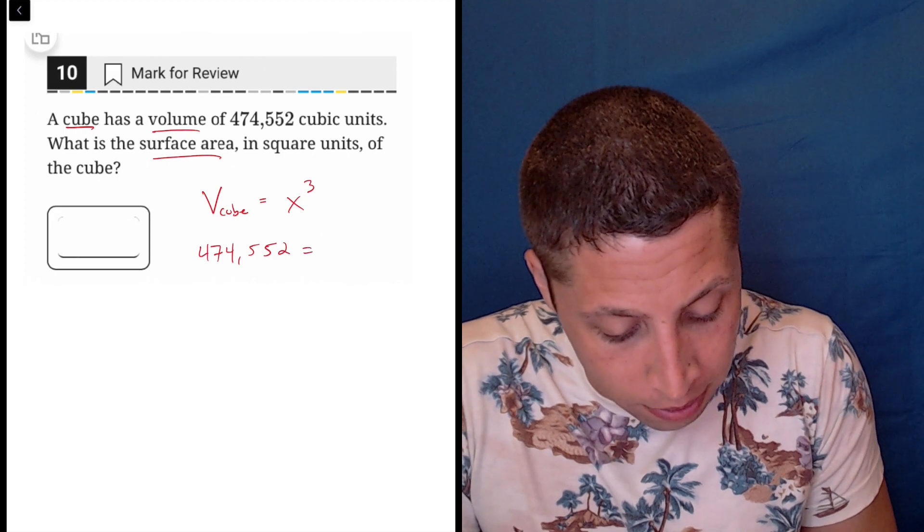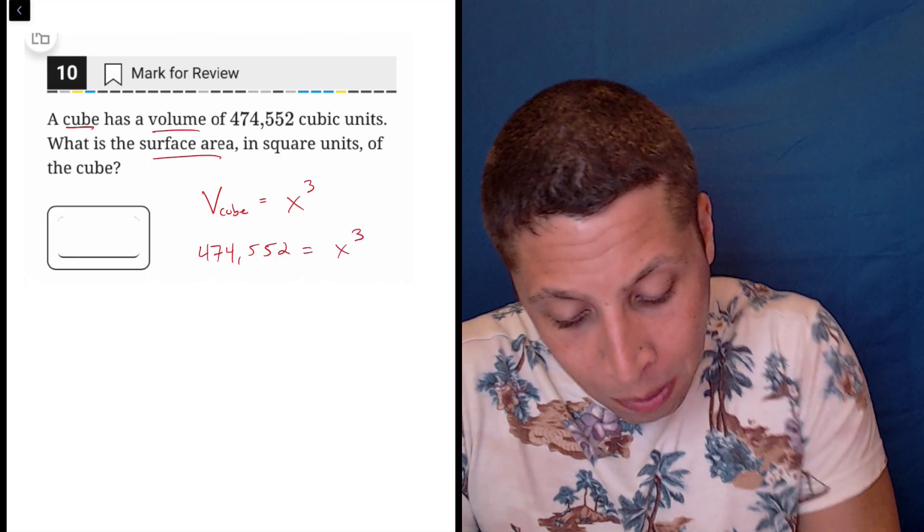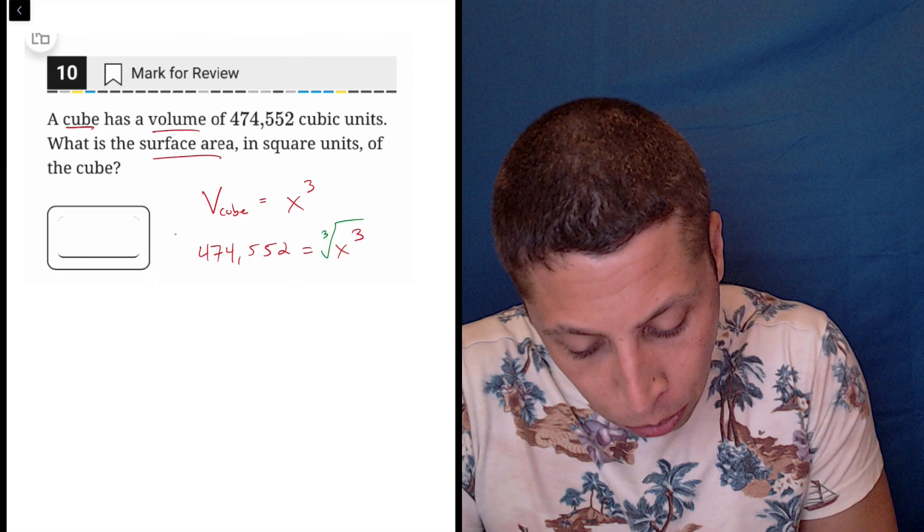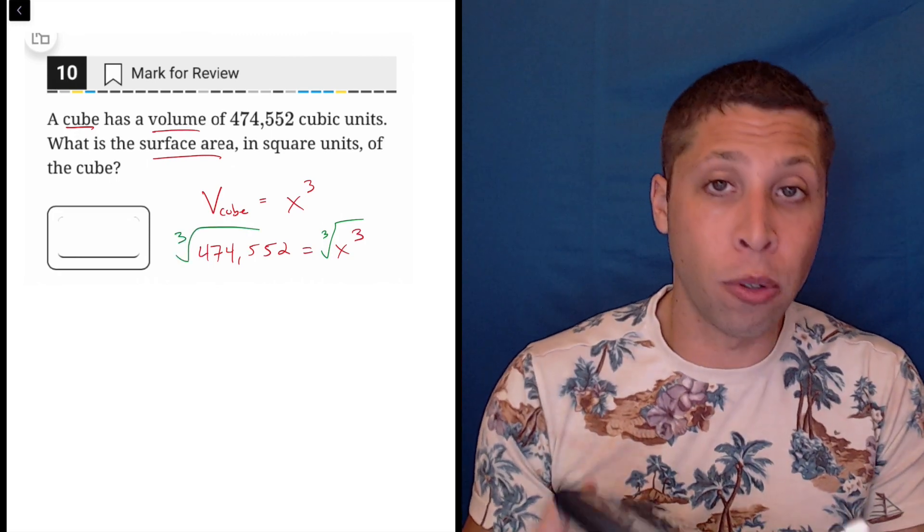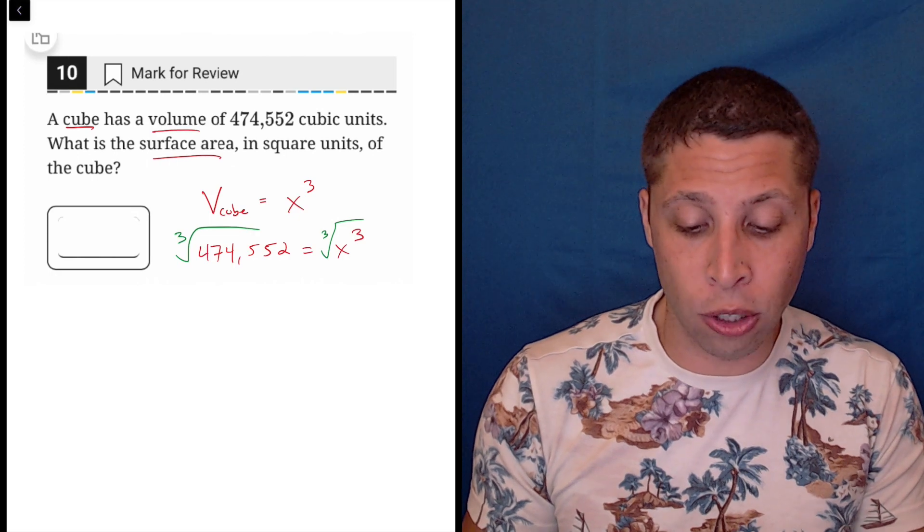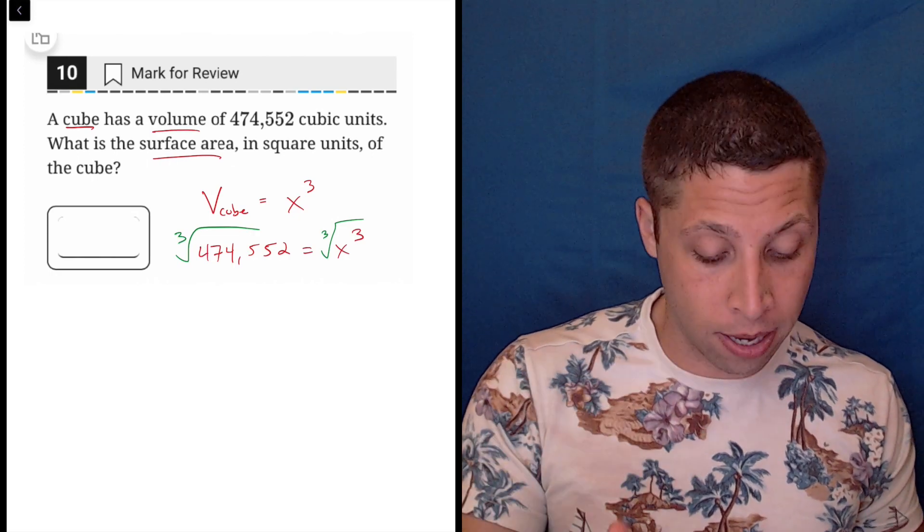So they say 474,552 is equal to x cubed, which means I'm gonna need to take the cube root of both sides. We have our calculator. If you don't know how to do this on a scientific calculator, you can definitely do this on the Desmos calculator.